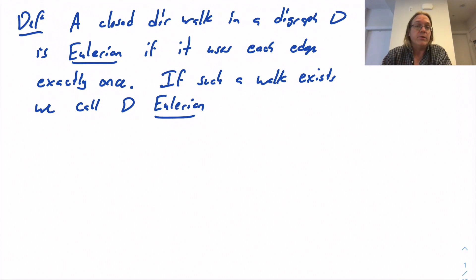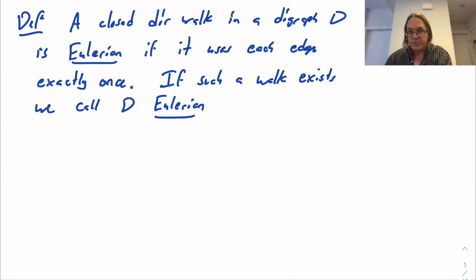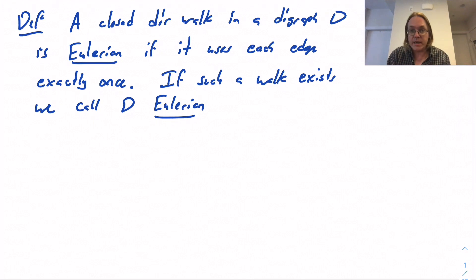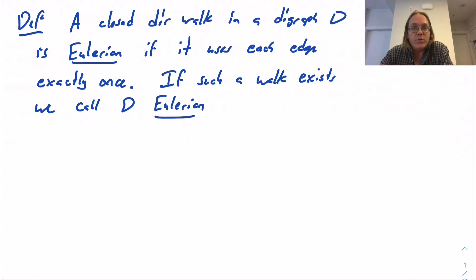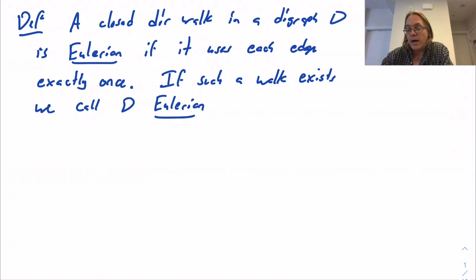Some of the concepts defined for undirected graphs roll over very naturally and play very much the same way in the directed setting, and some things just behave very differently. This is a case where everything goes smoothly. We don't even need any new ideas — we're just going to use exactly the same kind of reasoning and get to an analogous answer in the directed setting.